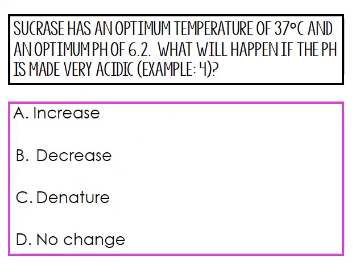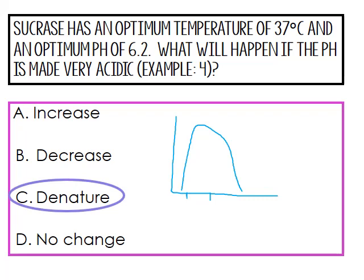Let's see what we remember. Sucrase has an optimum temperature of 37 degrees Celsius and an optimum pH of 6.2. What will happen if the pH is made very acidic — for example, if the pH is 4? Think back to the graph: the optimal pH is in the middle, and making it acidic moves you down the curve. If you said it's going to denature the enzyme, you are correct. Denature means it breaks apart and doesn't work.